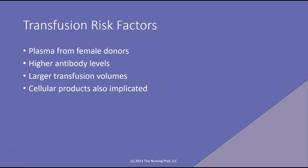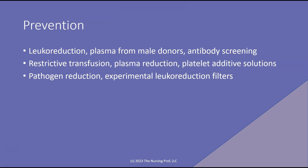Cellular products are also implicated — not just the blood itself but the cellular components as well. For prevention, leukoreduction may help. We can use plasma from male donors or perform antibody screening, apply restrictive transfusion strategies, use platelet additive solutions, pathogen reduction, and experimental leukoreduction filters.